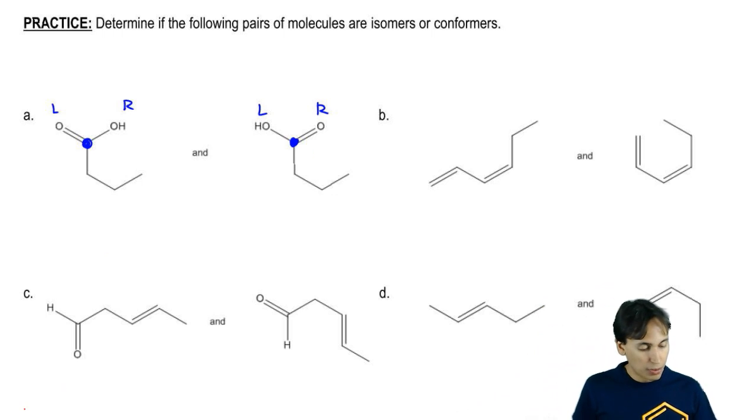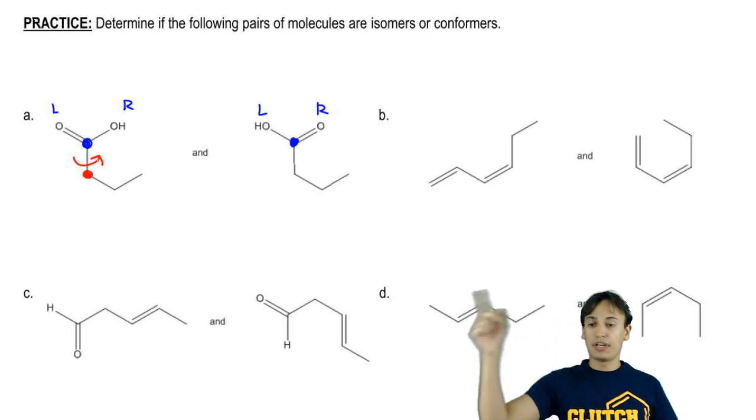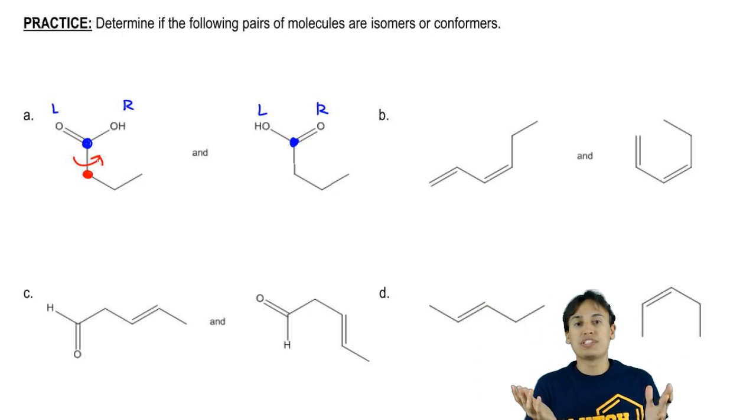Notice that the bond between the blue carbon and the red carbon is single. That means that it can rotate as much as it wants. If it rotates, my OH and my double bond O could easily switch positions without breaking the bond. As long as you have a single bond on your axis of rotation, you can rotate as much as you want.